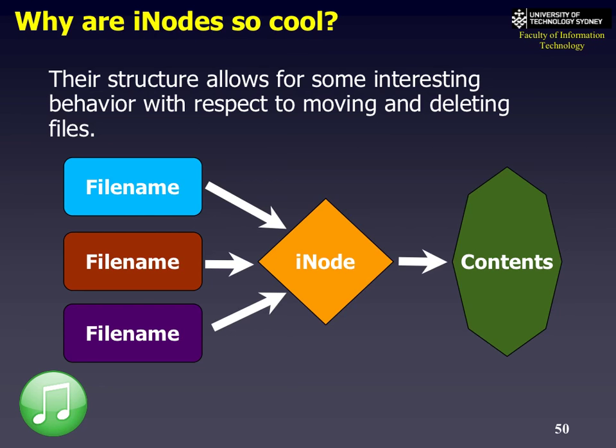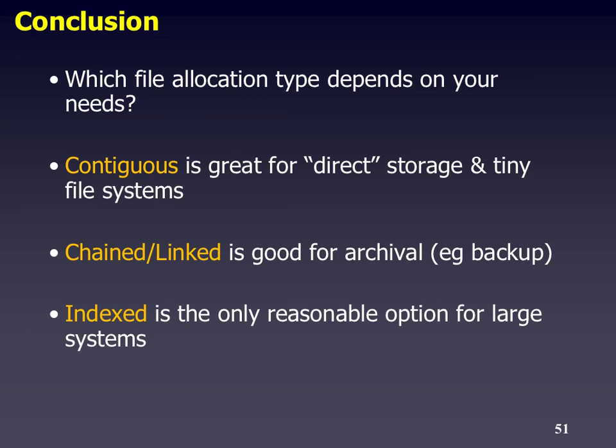In conclusion, there are three different types of file allocations: contiguous is good when you want direct storage, chained is good for archival single long lists of files, and indexed is quite good for larger systems. We'll talk about complexity next, because that will tell us basically which one to use in which situation.